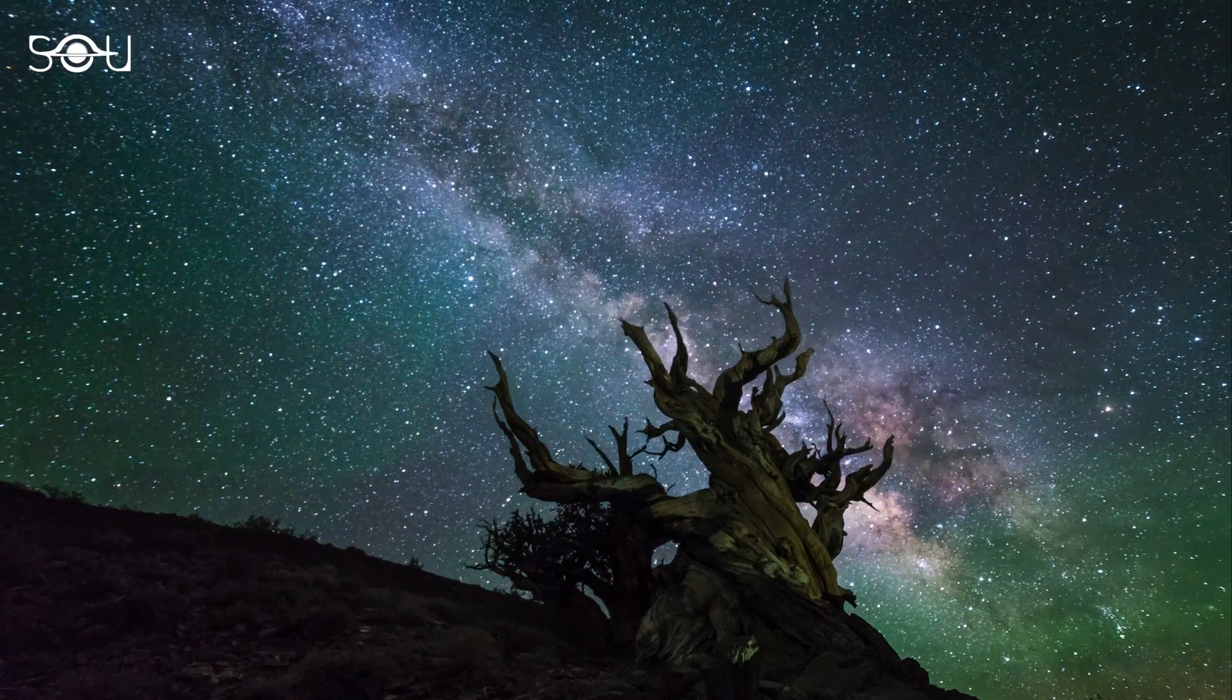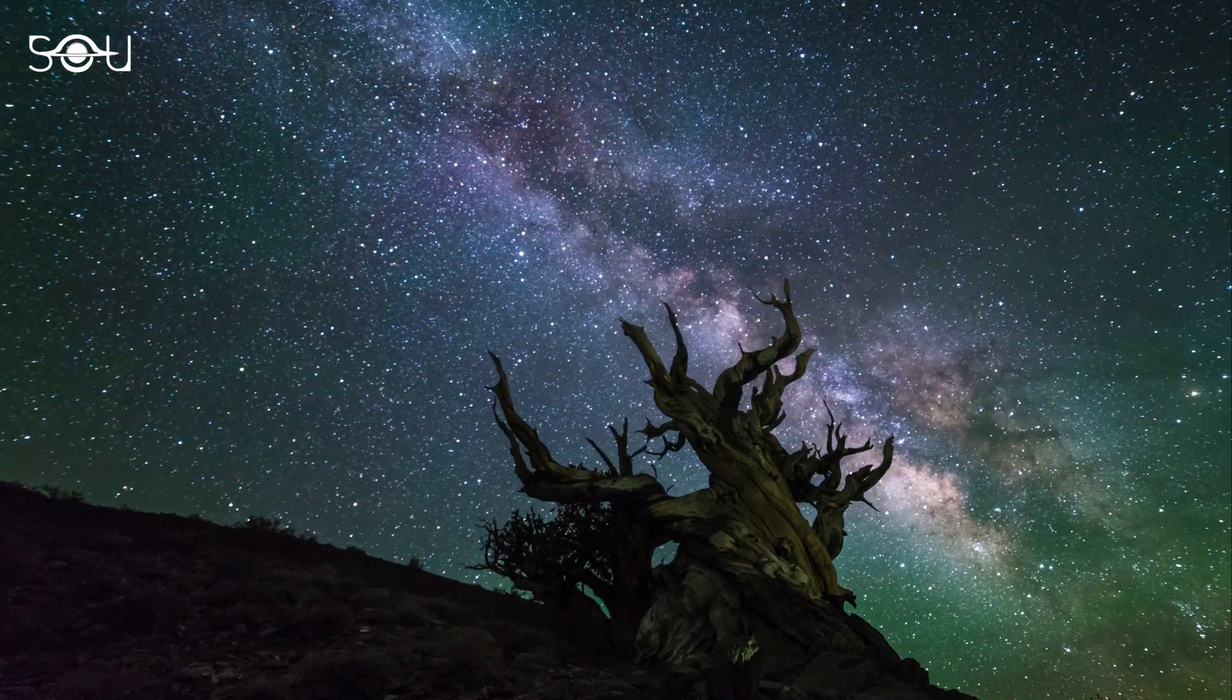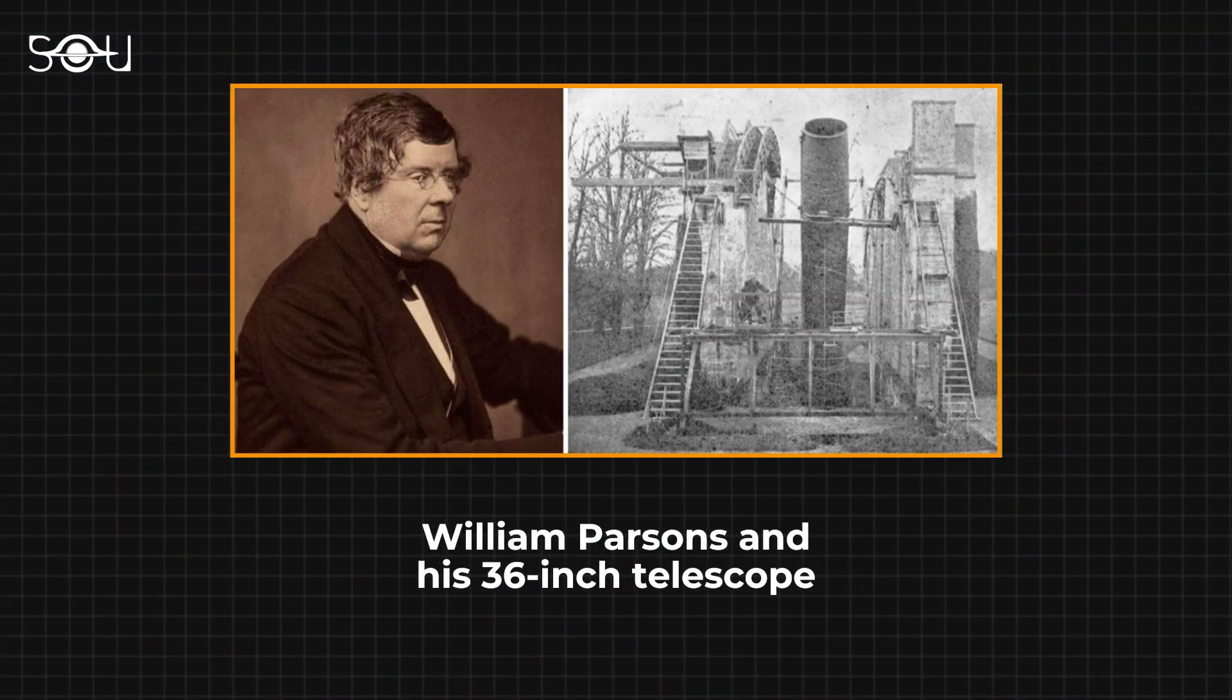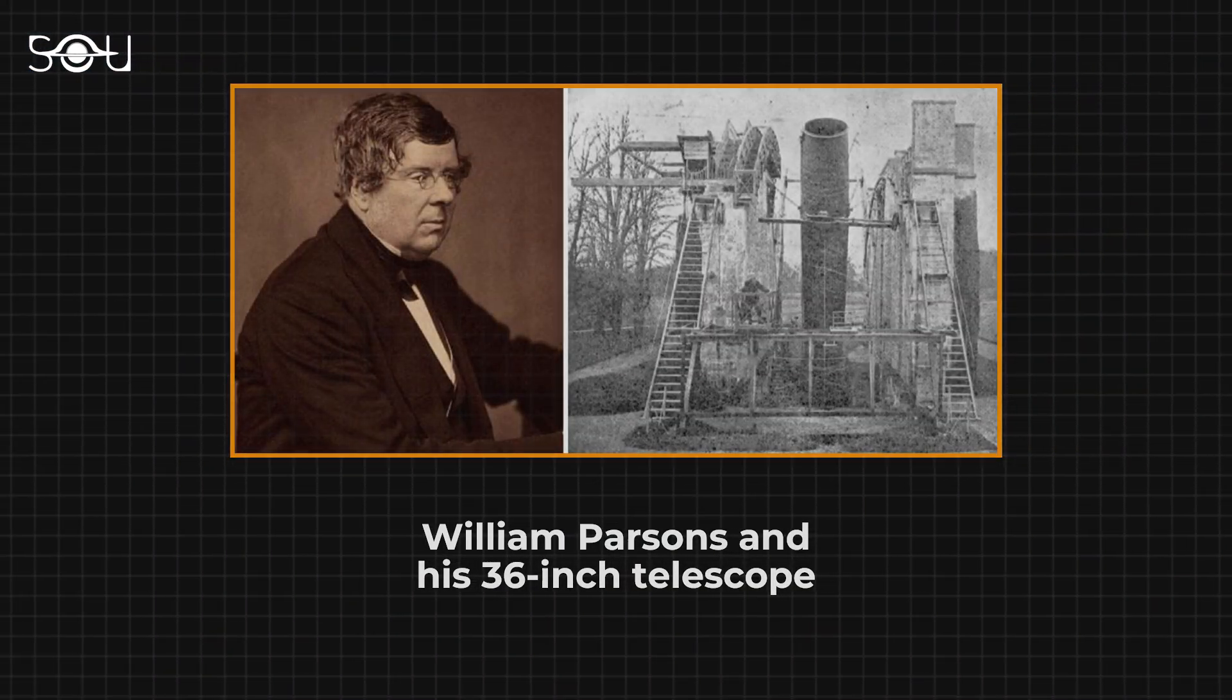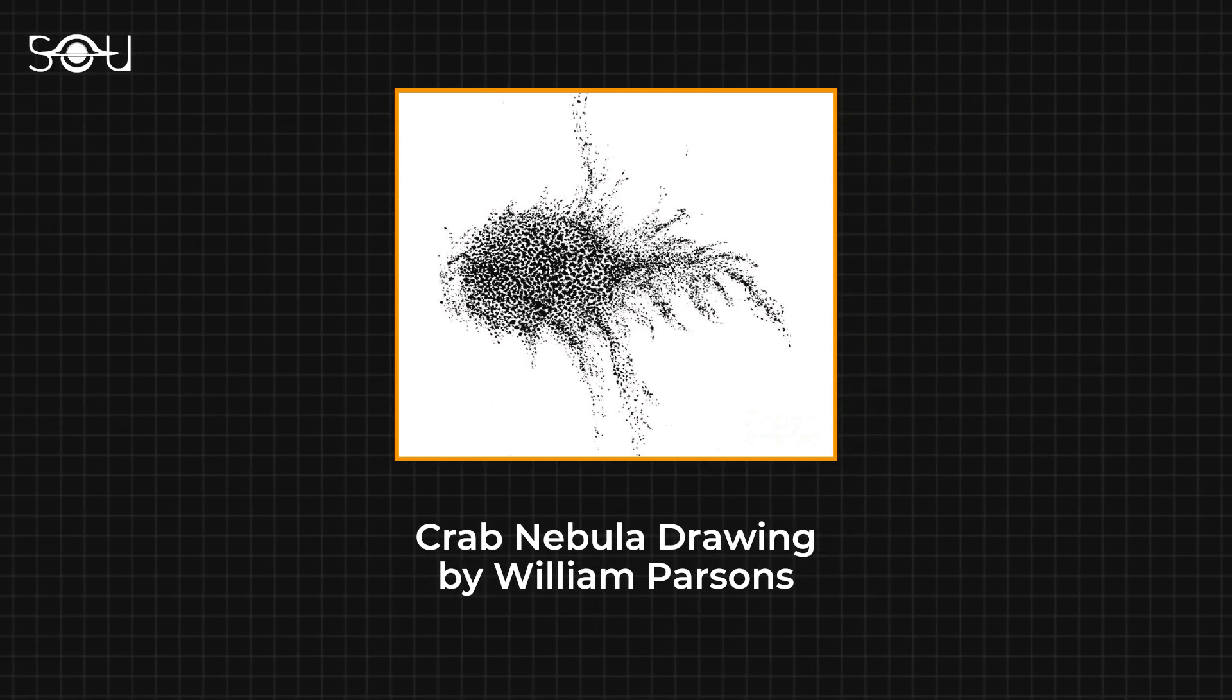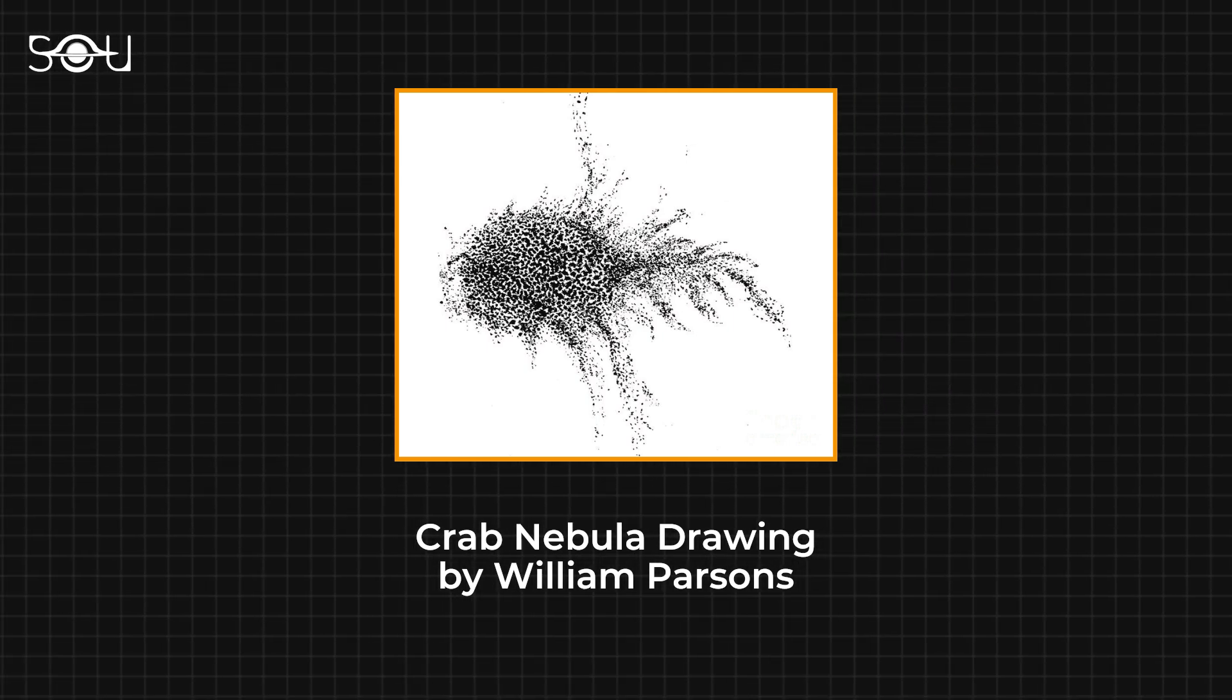Later, it gained the moniker Crab Nebula in the 1840s when William Parsons observed it through a 36-inch, 91-centimeter telescope. Parsons' sketch depicting a structure resembling a crab with arms led to the nebula's popular name.